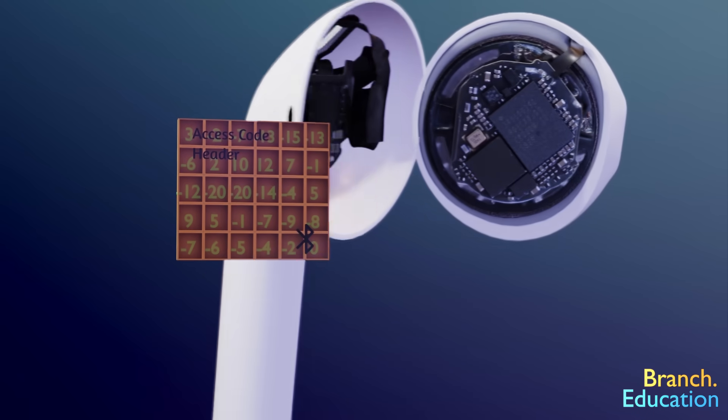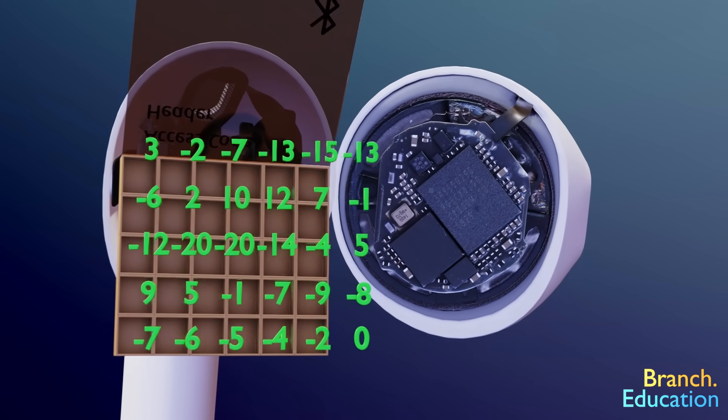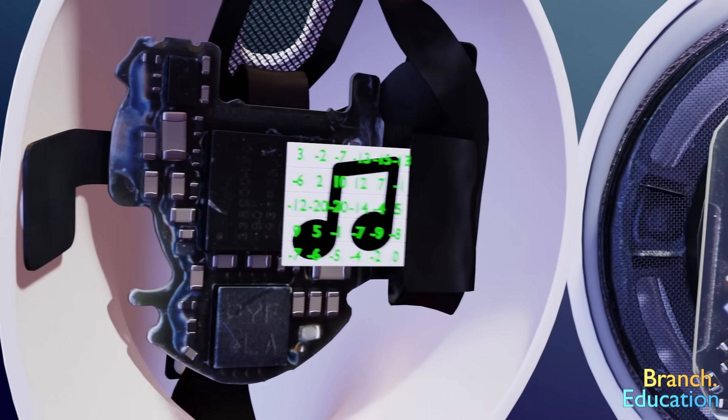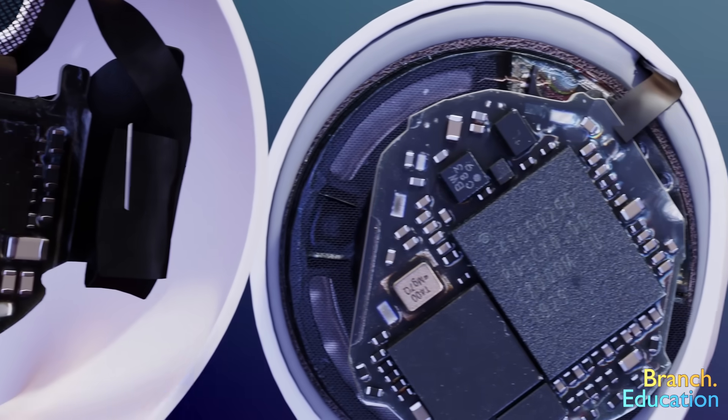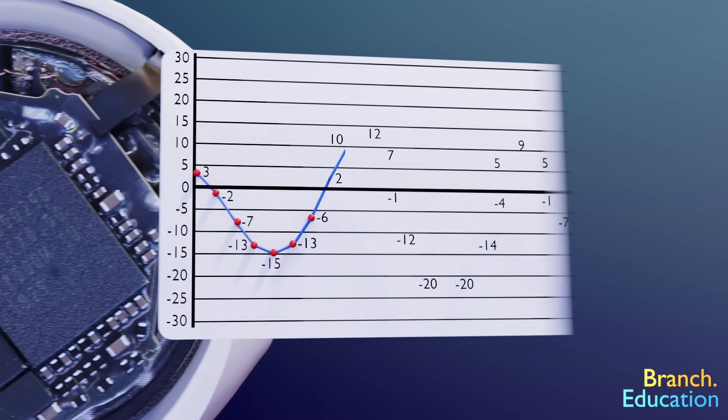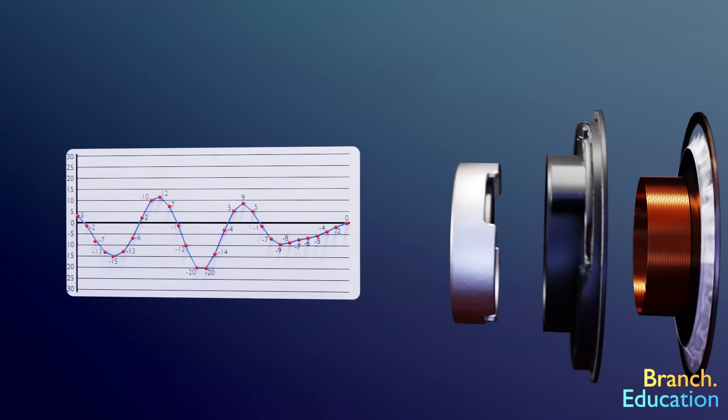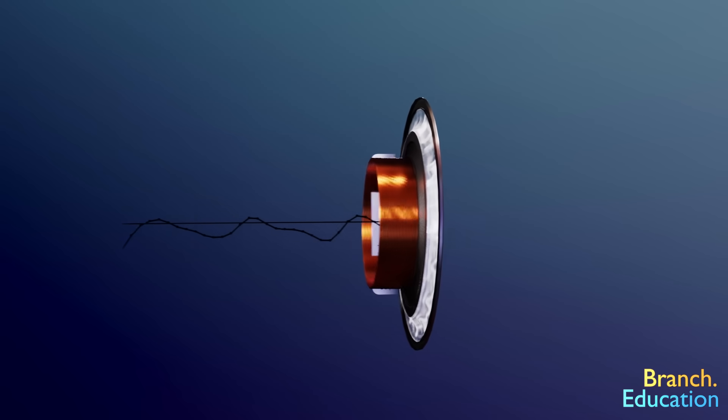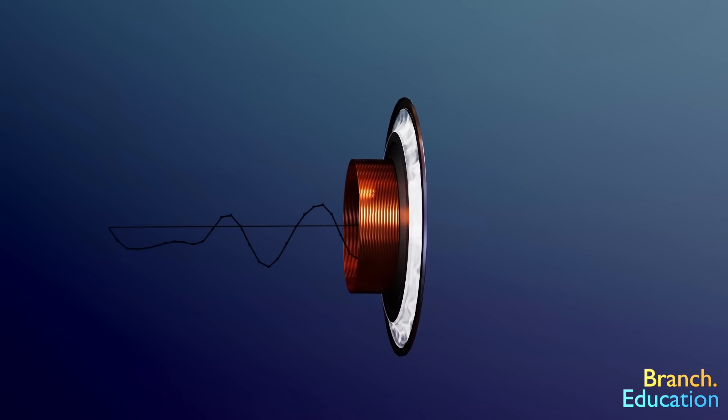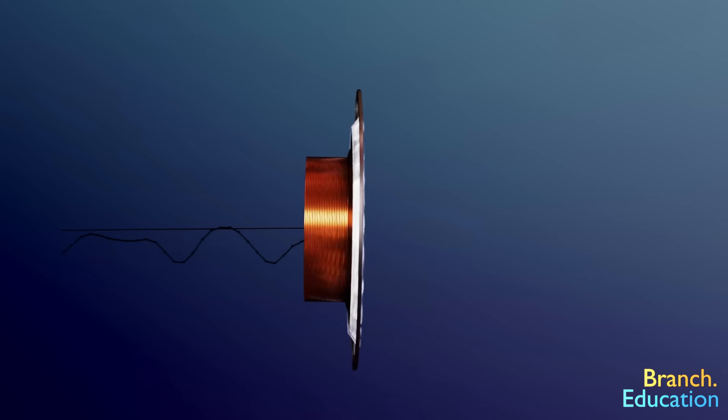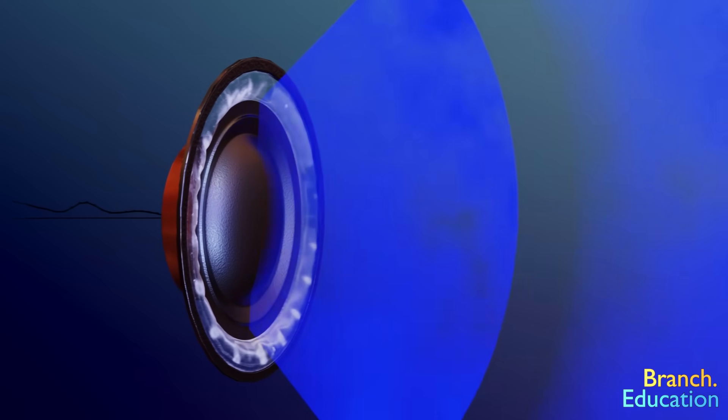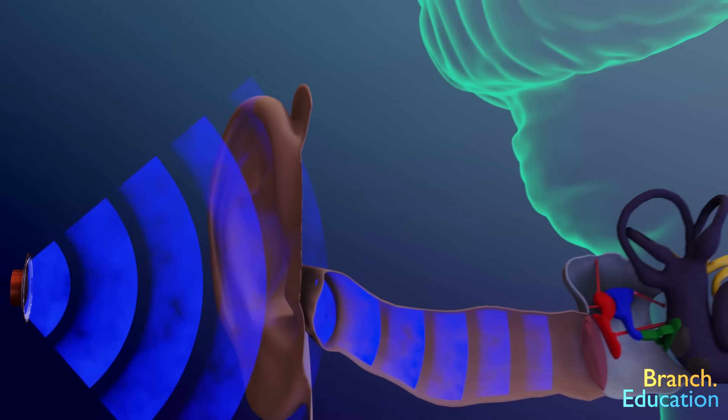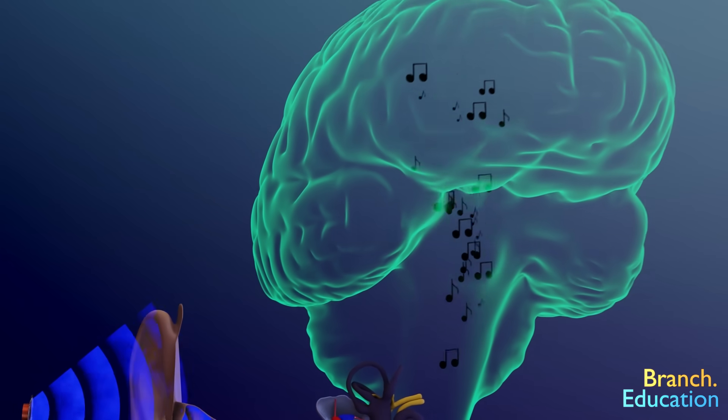The earbuds receive the data and disassemble and decompress the packets back into long sets of values. These values are then sent to the audio codec, which converts the digital values into an analog electrical waveform. This waveform is then sent to the voice coil, which is attached to the back of the diaphragm. The voice coil moves back and forth depending on the given waveform, thus moving the diaphragm, which in turn creates pressure waves in the air. These pressure waves are sensed by your ear and interpreted as sound by your brain.